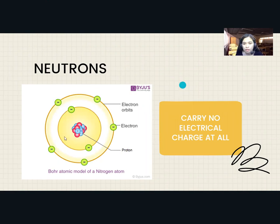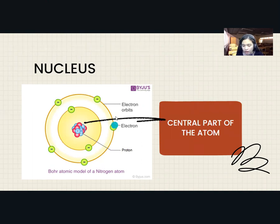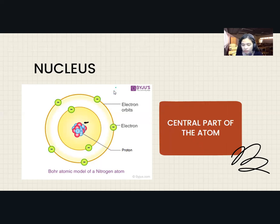The central part of the atom is called the nucleus, and the electrons orbit the nucleus. A particular atom will have the same number of protons and electrons, and most atoms have at least as many neutrons as protons.